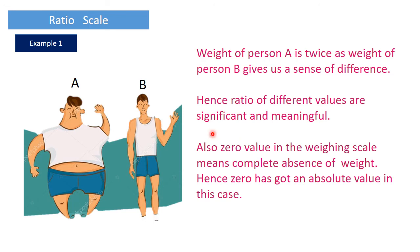One example of ratio scale: if the weight of person A is twice the weight of person B, it makes sense in this case. Hence the ratio of different values is significant and meaningful. There is also an absolute zero axis in this scale — a zero value on a weighing scale means the complete absence of weight, so zero has an absolute value here.